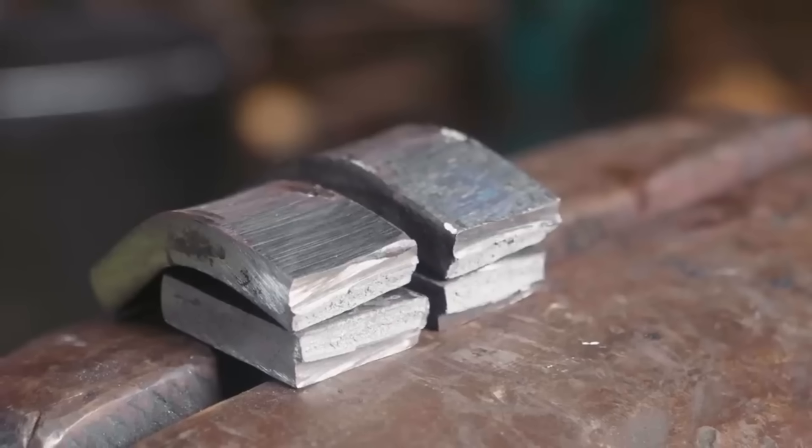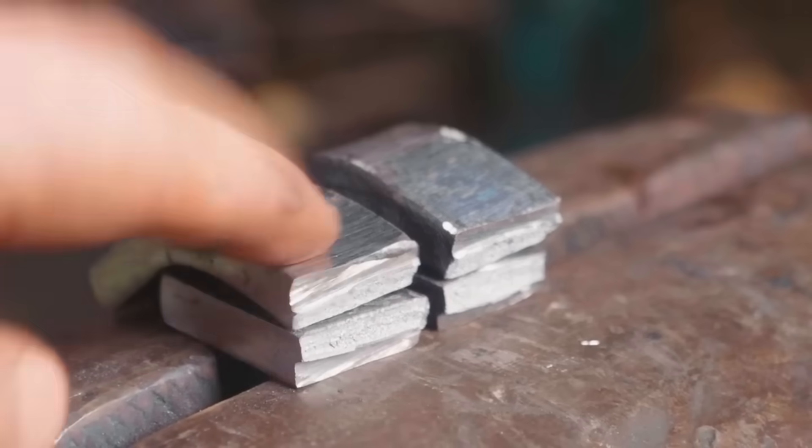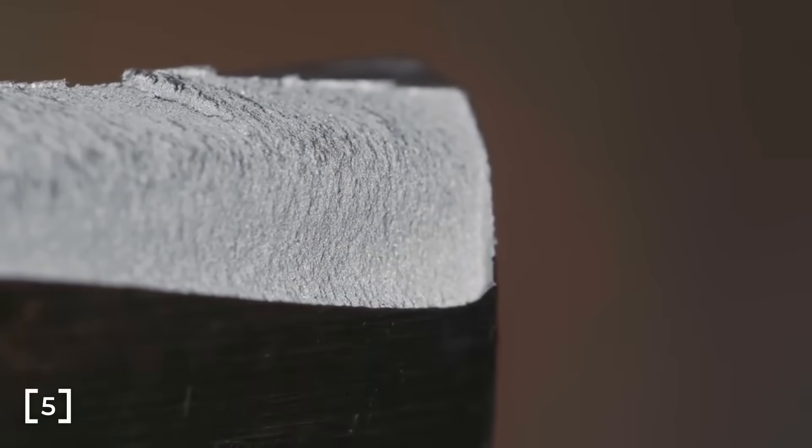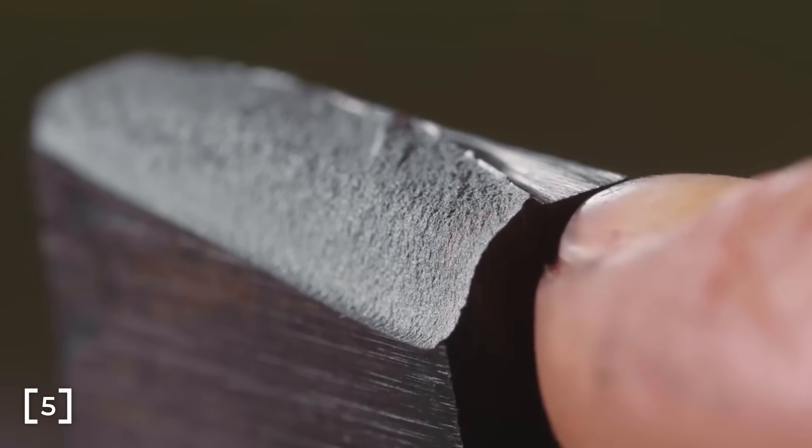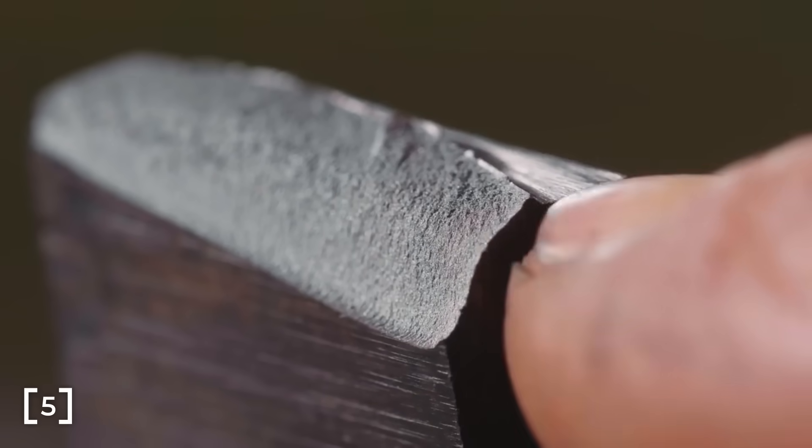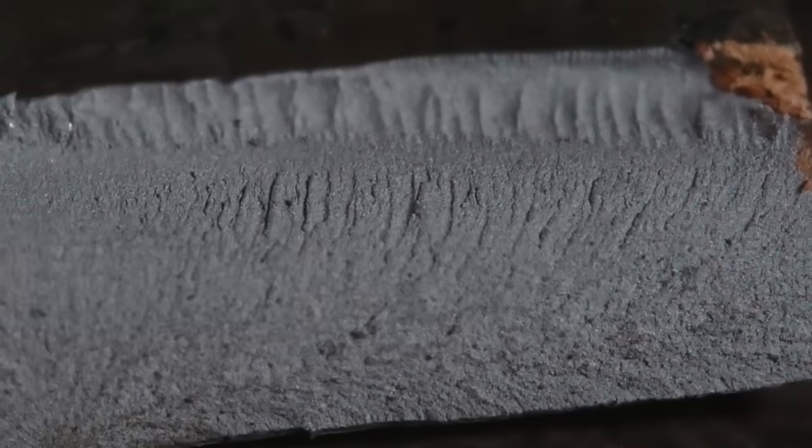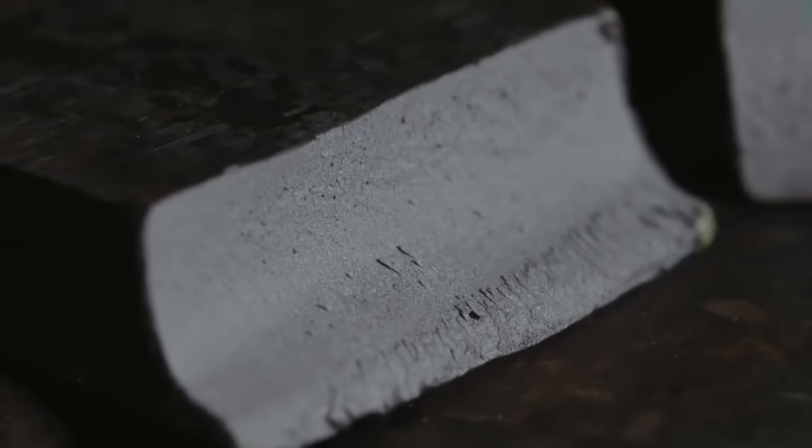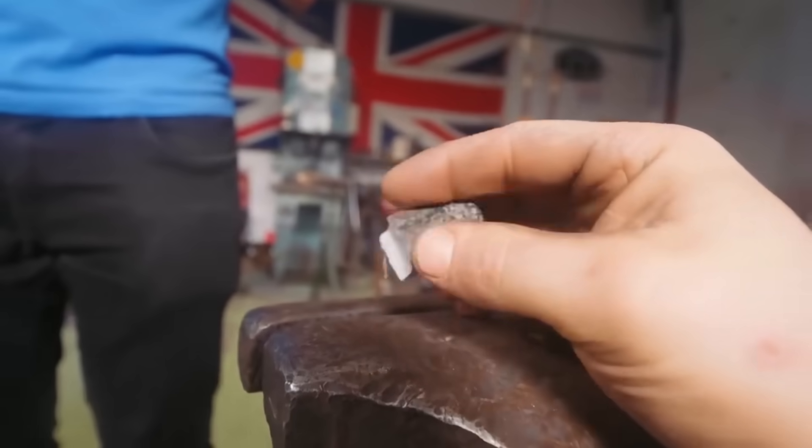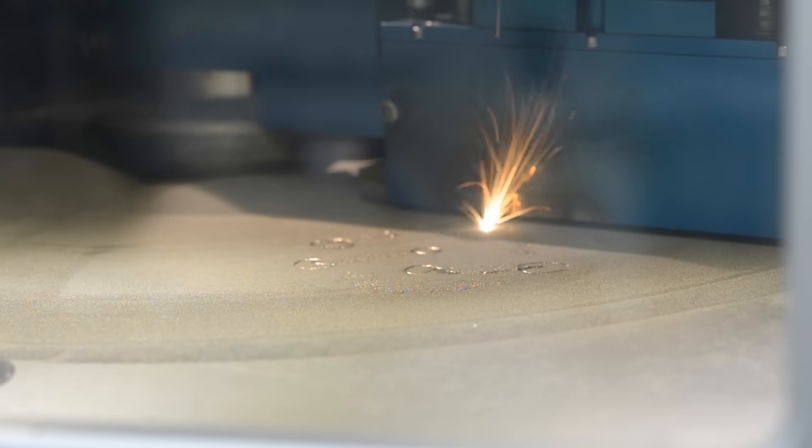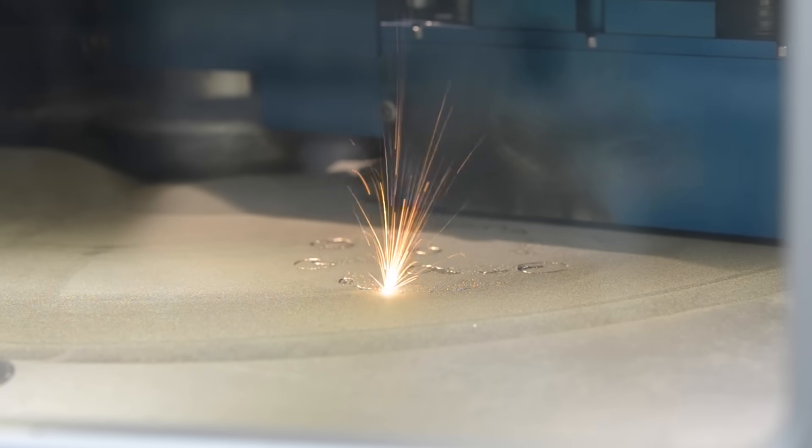So why does this happen? First we need to understand what causes fatigue fractures. The primary cause of these fractures is crack growth, where small voids and imperfections within the part can force stress to divert and pile up in sharp corners and thus exceed the metal's strength locally and cause the crack to grow. The more imperfections present, the more likely your fatigue life is going to suffer, and 3D printed materials tend to have a lot of imperfections.